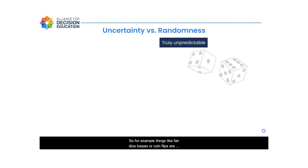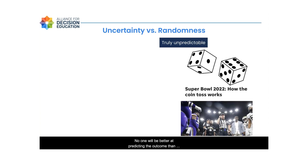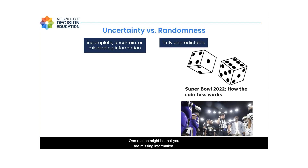For example, things like fair dice tosses or coin flips are examples of randomness. Each time you flip that coin or toss those dice, there is no way to predict the outcome. No one will be better at predicting the outcome than anyone else, regardless of how much skill or content knowledge they have. This differs from situations in which you simply have uncertainty surrounding an outcome. There are a number of reasons you could have uncertainty — one reason might be that you are missing information.